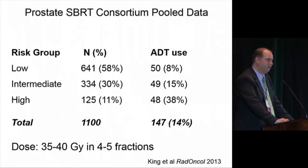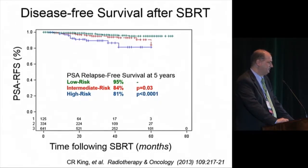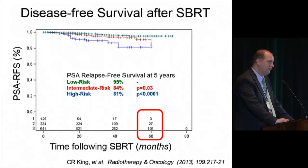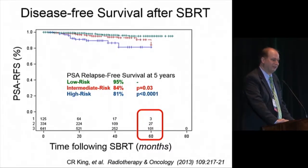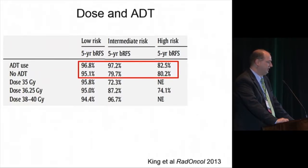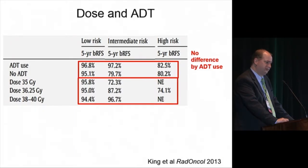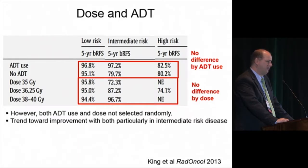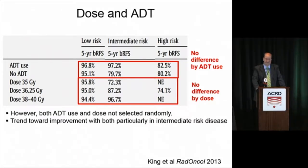A pooled analysis included about 1,100 patients from eight institutions, all prospective phase two trials, with a median follow-up of one year and a range between one and seven years. The majority were low-risk at 58%, with a small portion of intermediate-risk and about 125 high-risk patients. Doses ranged between 35 and 40 gray in four to five fractions. Biochemical control at five years was 95% for pooled low-risk, 84% for intermediate-risk, and 81% for high-risk, though only three high-risk patients were at five years.